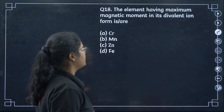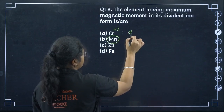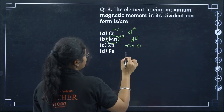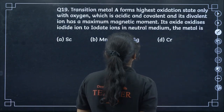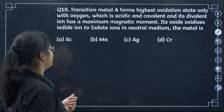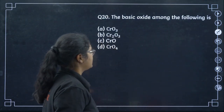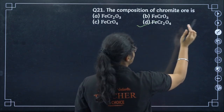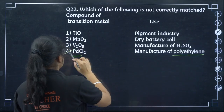The element with maximum magnetic moment in its divalent ion: Cr2+ has D4 configuration, Mn2+ has D5 configuration, Zn2+ has no unpaired electrons, Fe2+ has 4 unpaired electrons. So maximum unpaired electrons and maximum magnetic moment is Mn2+ — option B. Transition metal A forms the highest oxidation state only with oxygen; its divalent ion has maximum magnetic moment — that element is manganese. The basic oxide is chromium oxide, and the composition of chromite ore is FeCr2O4 — option D. PdCl2 for manufacture of polyethene is incorrectly matched — option 4.